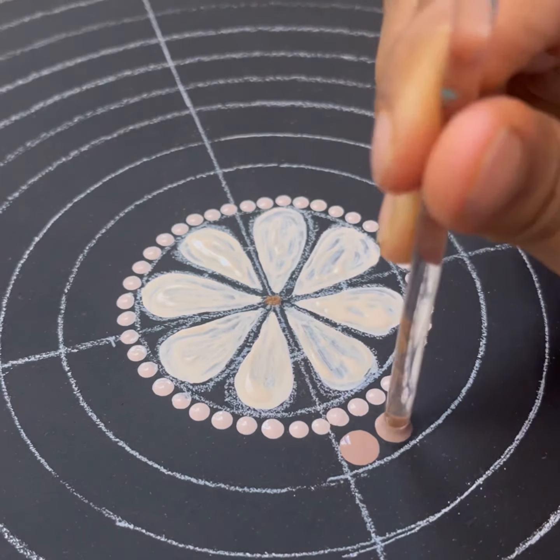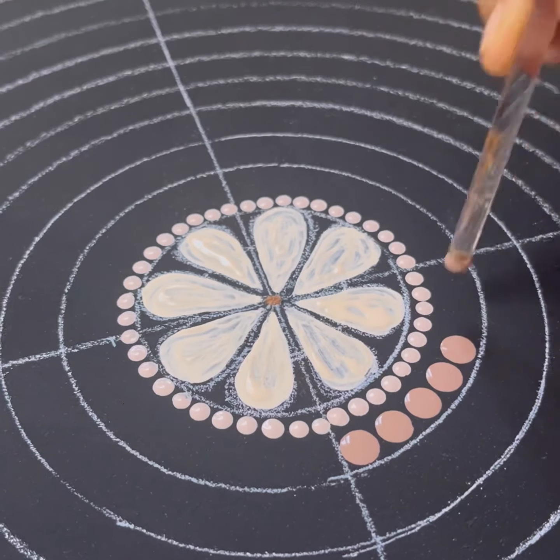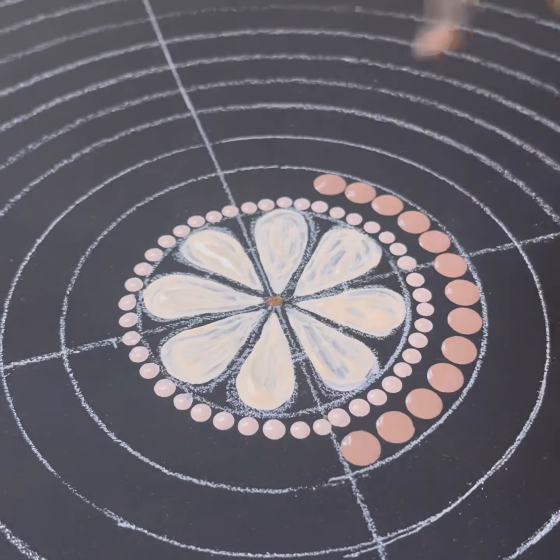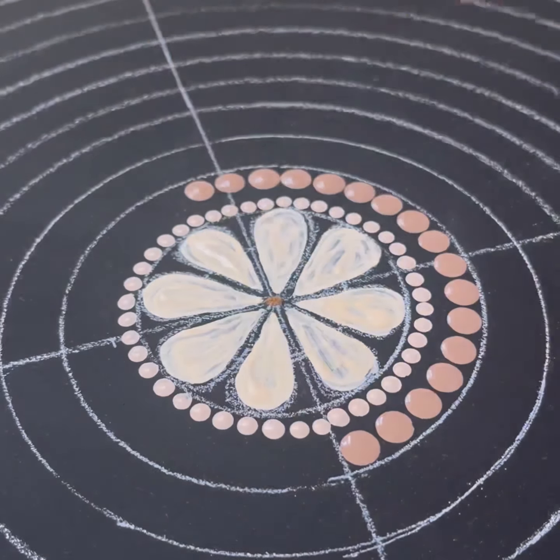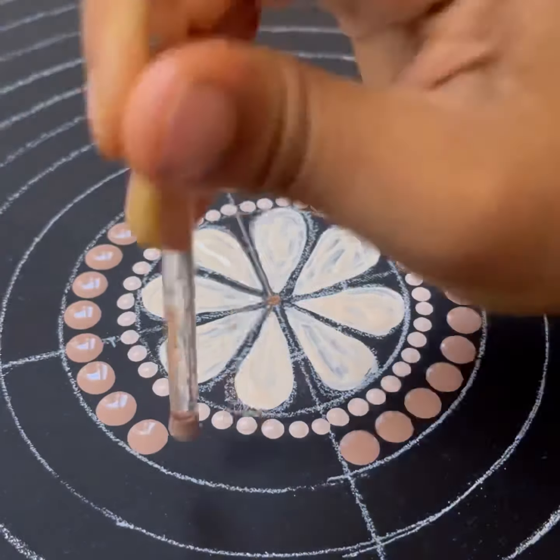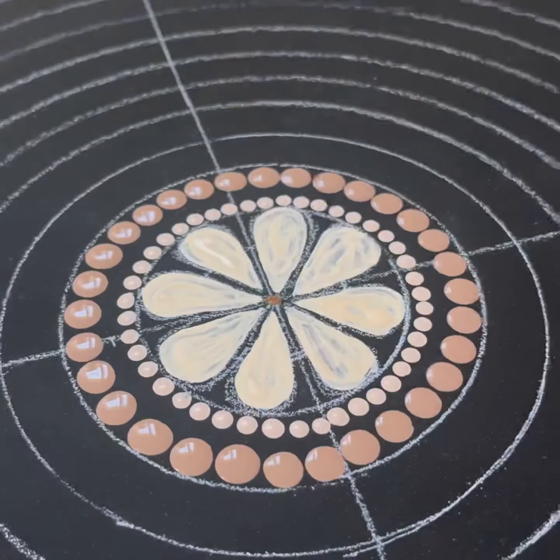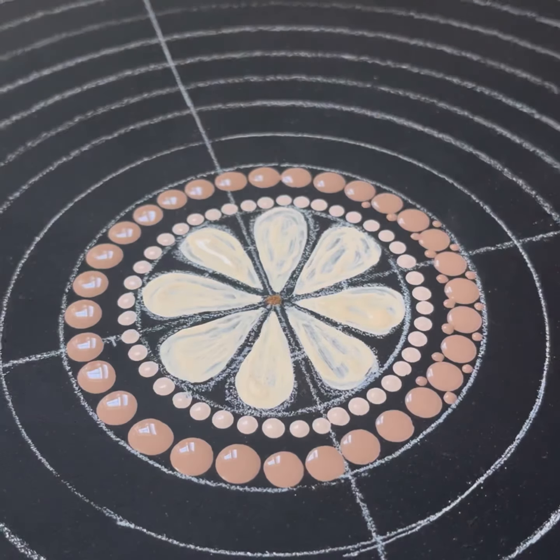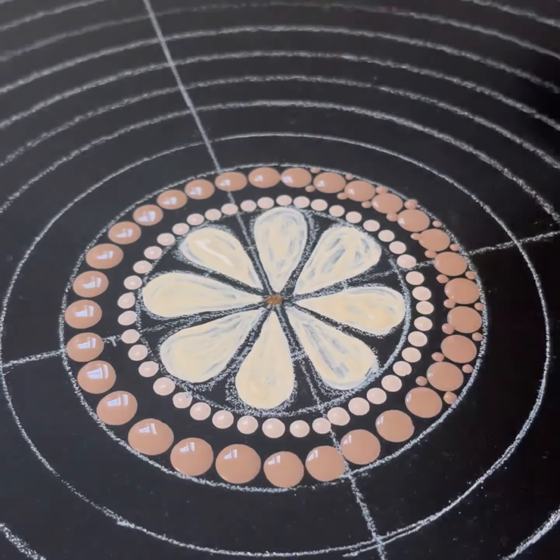And then using chocolate brown I'll make larger dots using a larger mandala tool. Now here I'll try to add the details over these dots which I have made using chocolate brown color.